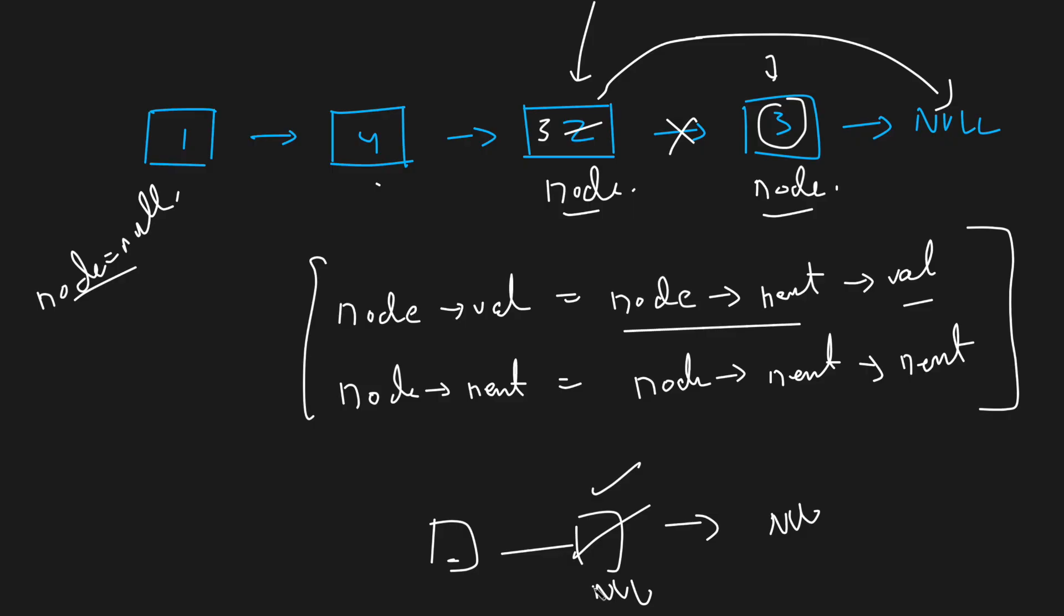The time complexity is O(1), that is constant in nature. Space complexity is O(1) obviously.